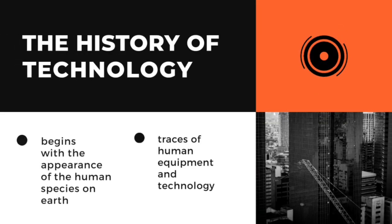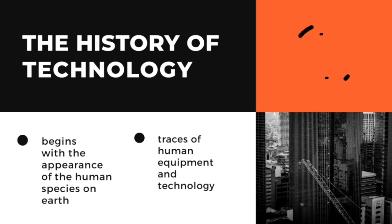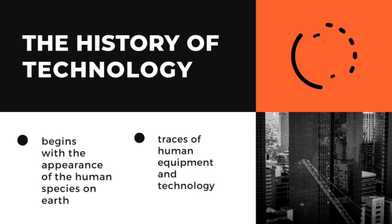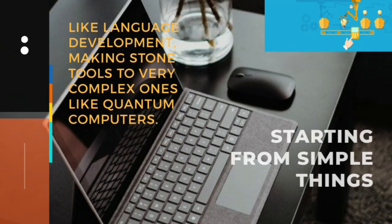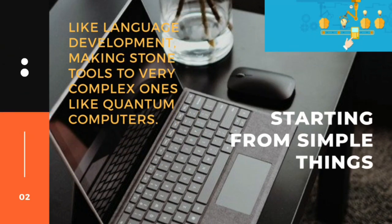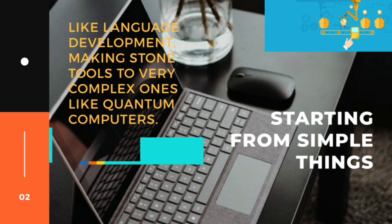The history of technology begins with the appearance of the human species on earth, tracing human equipment and technology since the beginning of civilization — starting from simple things like language development and making stone tools, to very complex ones like quantum computers.